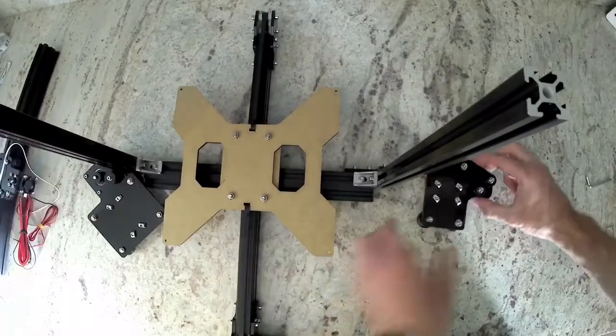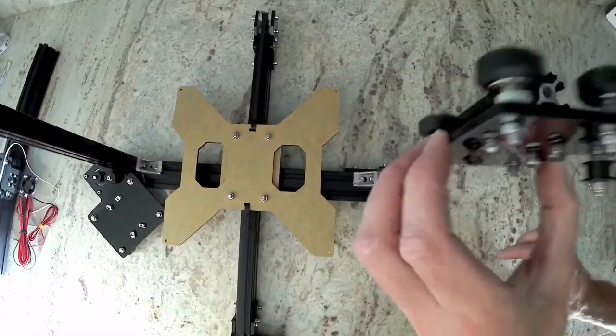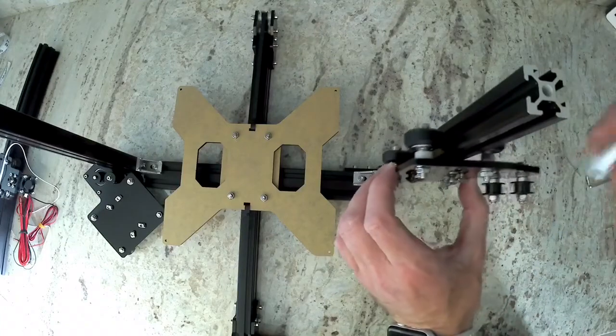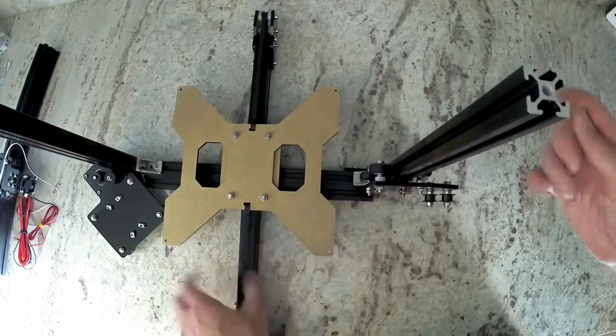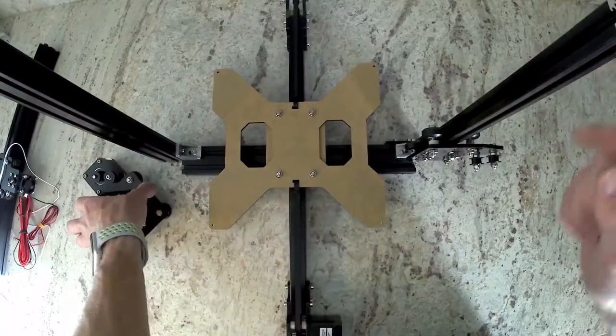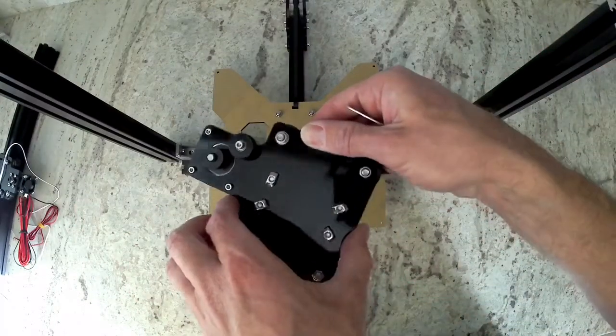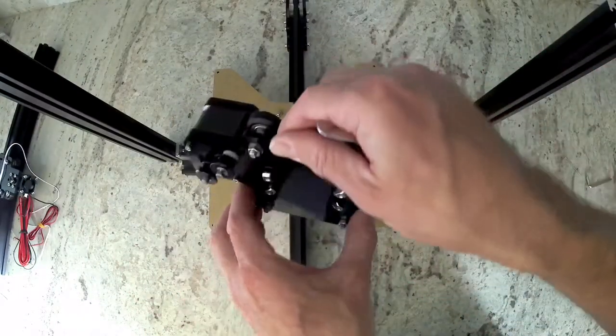Next, we're going to fit the x-idler. Go ahead and slide it on the end extrusion. Then we're going to go ahead and adjust those eccentric spacers as needed until it moves freely but doesn't have any play. And then do the same thing on the left side with your x-motor.